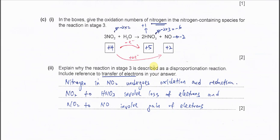Part C(i): In the boxes, give the oxidation numbers of nitrogen. For NO2 we know that oxygen is -2 times 2 is -4. This molecule is neutral, so nitrogen must be +4.